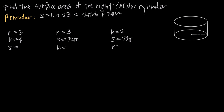In this video we're talking about how to find the surface area of a right circular cylinder. When we say a right circular cylinder, we're talking about a cylinder where the base and the top are both circles, and we have right angles, or 90 degree angles, between the top and the base and the side of the cylinder.